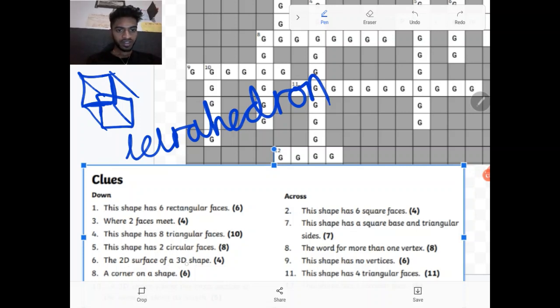This 2D surface. This is the 2D surface of a 3D shape. So these surfaces they are called a face. The 2D. So this is referring to only one of them. So you say face rather than faces.